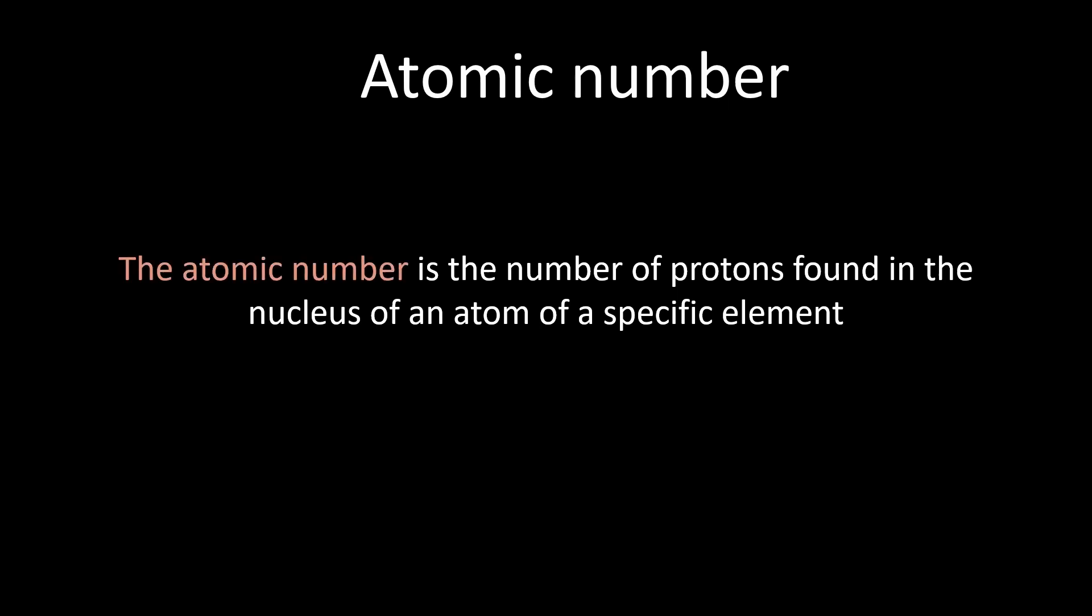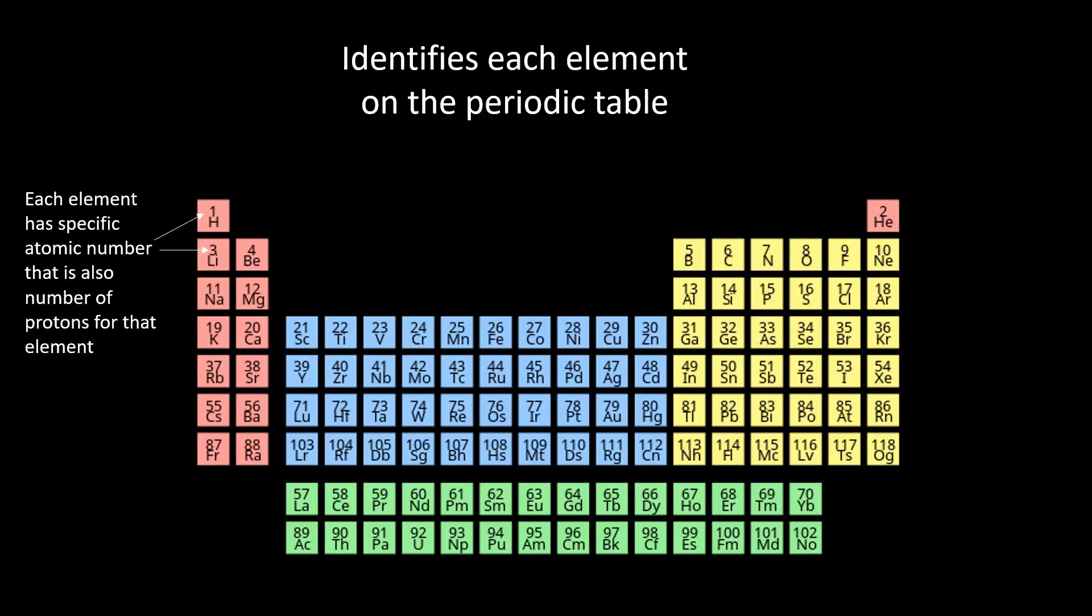The atomic number is the number of protons found in the nucleus of an atom of a specific element. It's a unique identifier for each element on the periodic table, and it determines the element's chemical properties and its position within the periodic table.